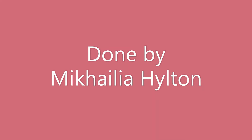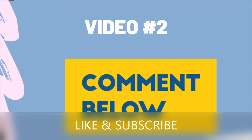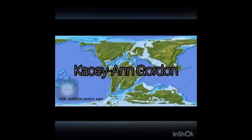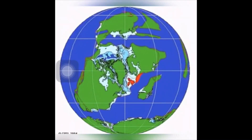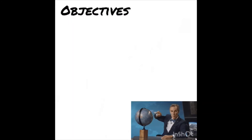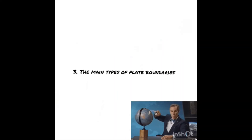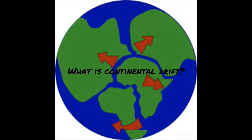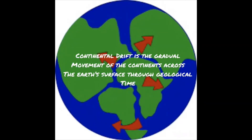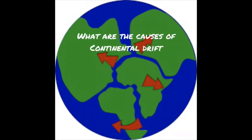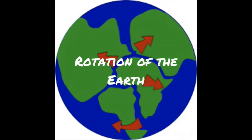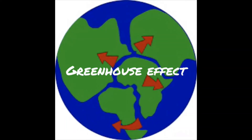The objectives for today's video: number one, what is continental drift; number two, what are the causes of continental drift; number three, the main types of plate boundaries. Continental drift is the gradual movement of the continents across the Earth's surface through geological time. The causes of continental drift include rotation of the Earth, subduction, plate greenhouse effect, and ocean floor spreading.